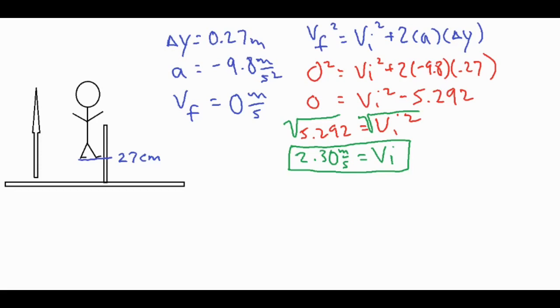So from there we can find a bunch of different things. Now if we know that the person leaves the ground at 2.3 meters per second, then as they rise and fall, they're going to return back to the ground at negative 2.3 meters per second because they're going downward. So we can use that to our advantage.